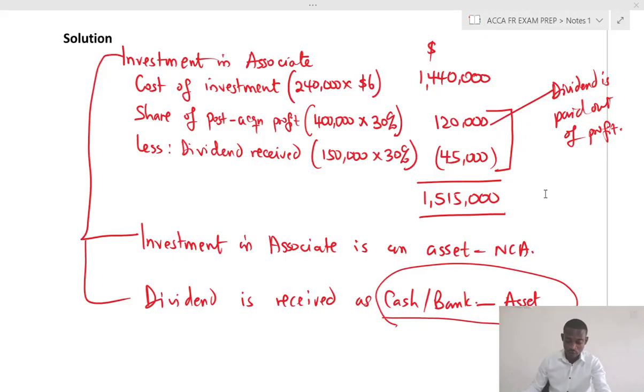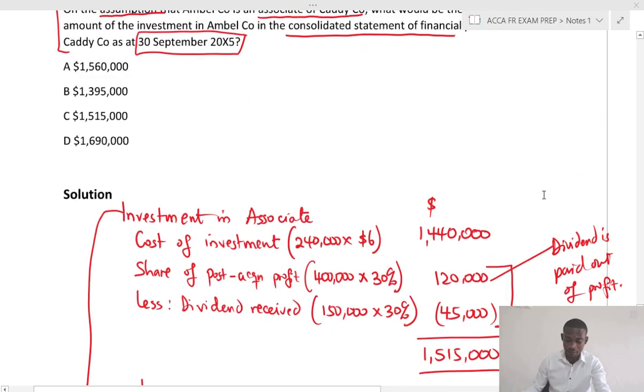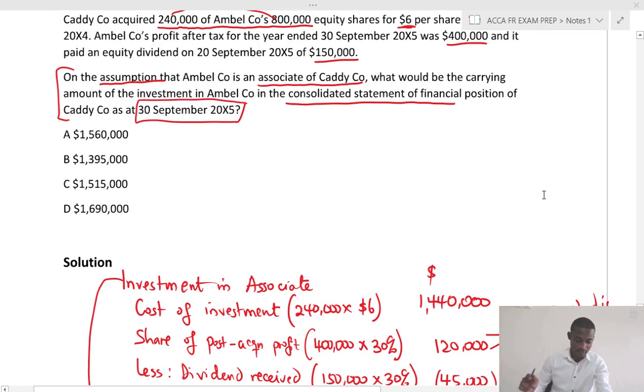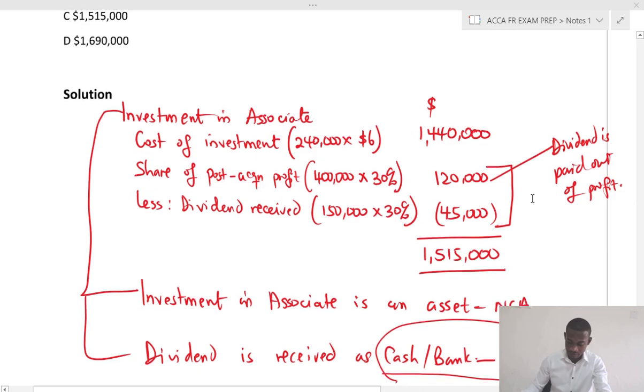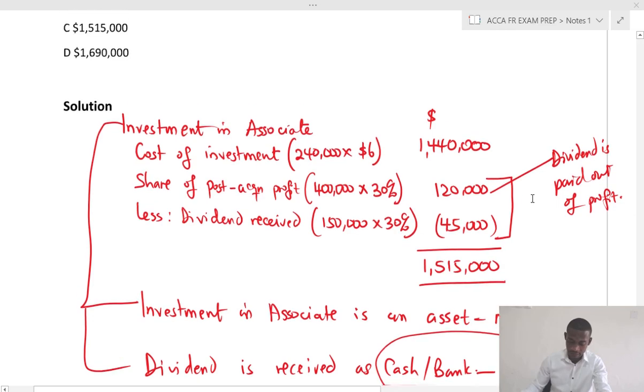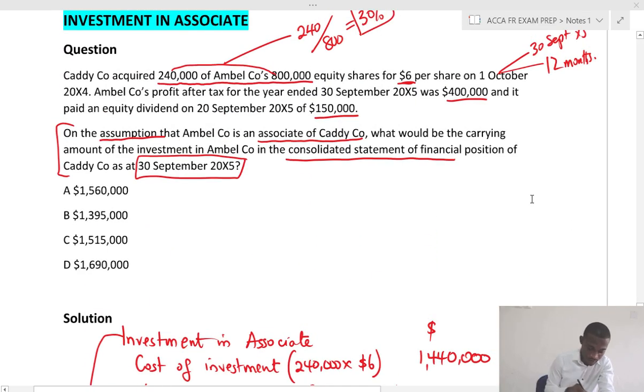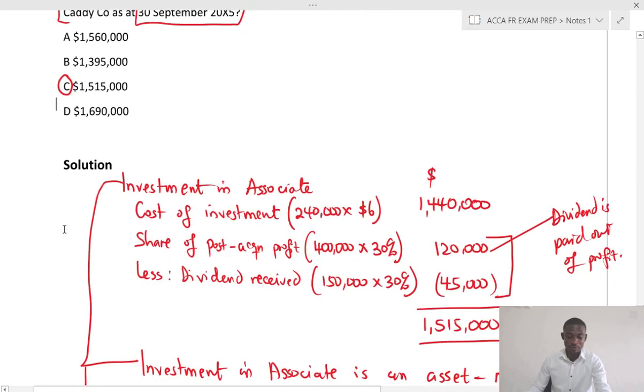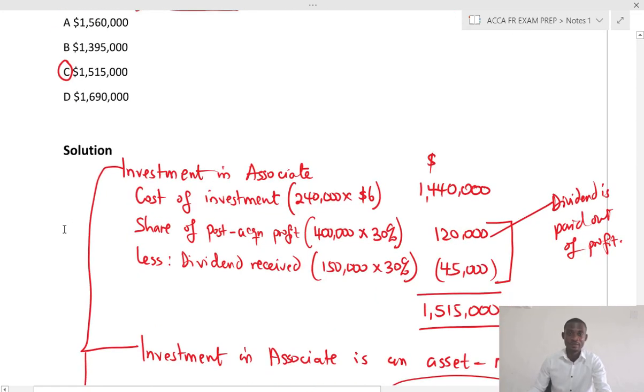So now let's conclude this question by looking at which option is the answer. The calculation is $1,515,000. So this would give us option C. I hope this helps you in your preparation for the FR exam. Please subscribe to this channel to receive updates on new videos.